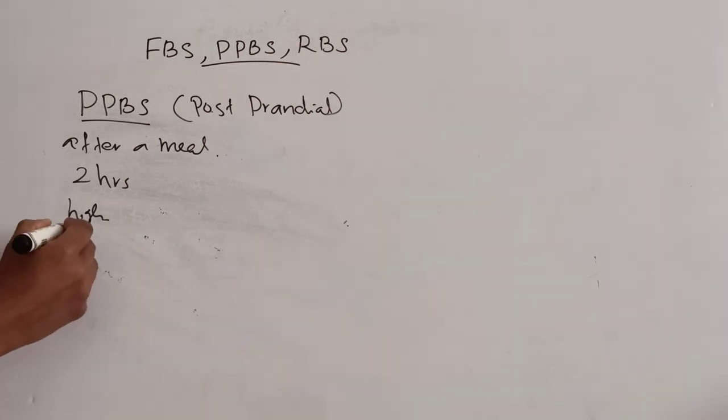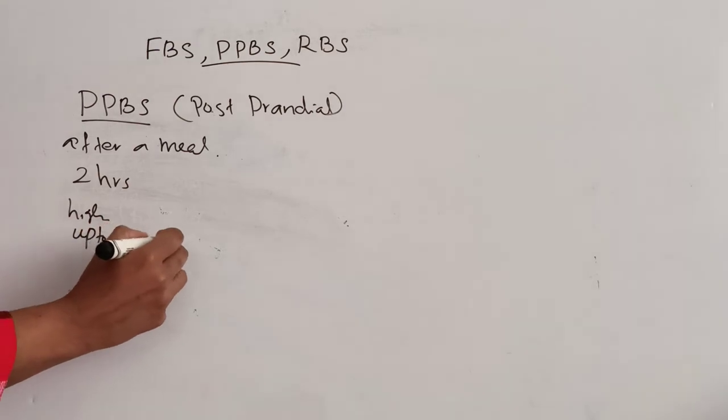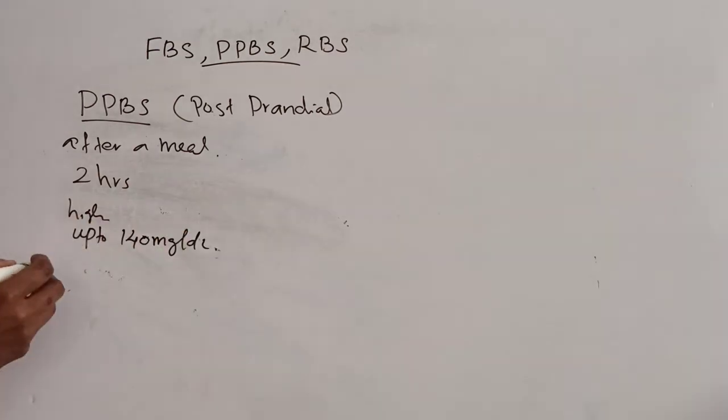The normal value is up to 140 mg per dl. Usually, PPBS is done along with FBS. That is about PPBS. The test is done 2 hours after a meal.